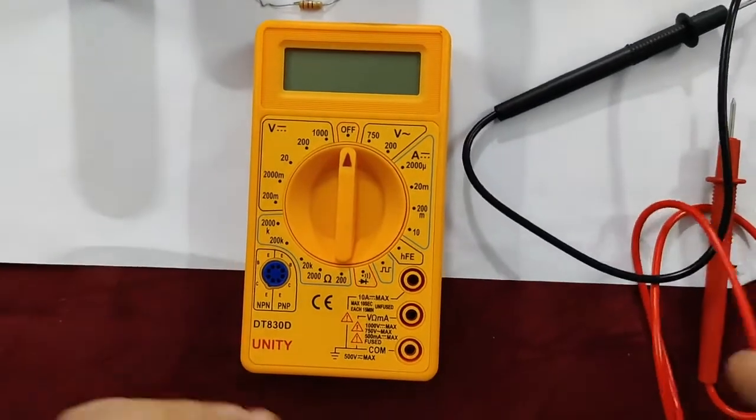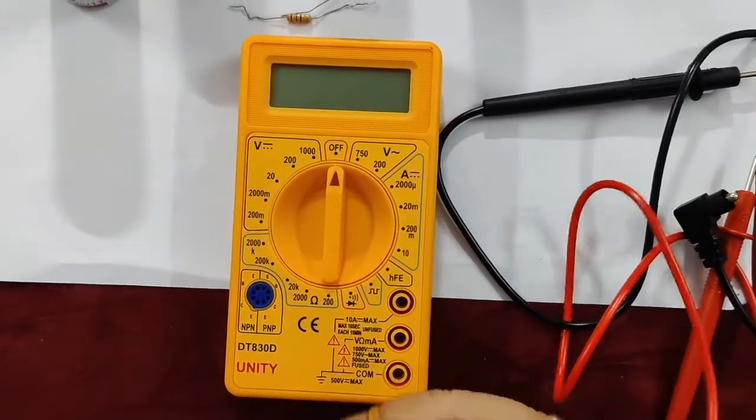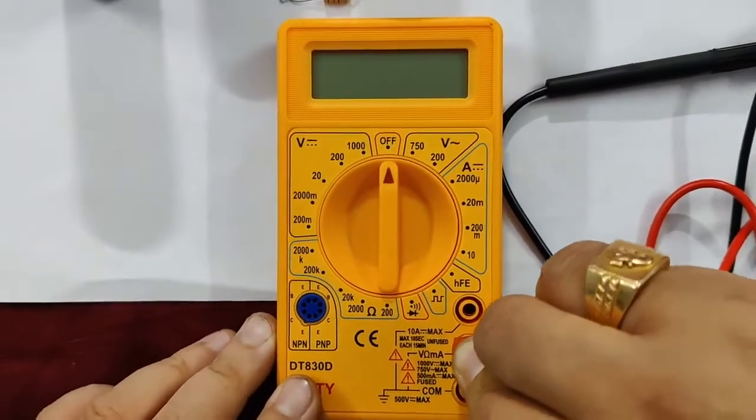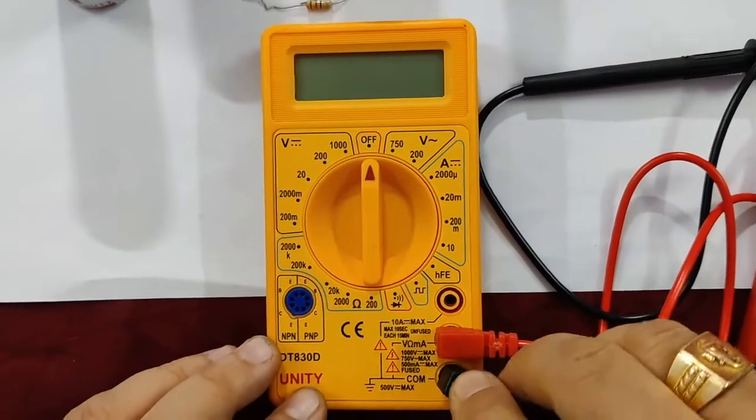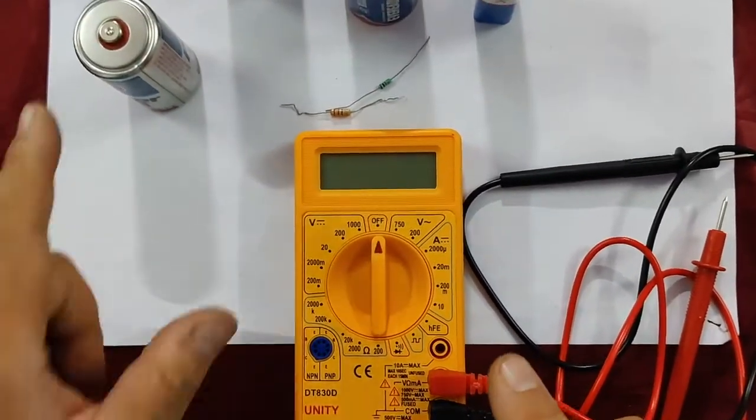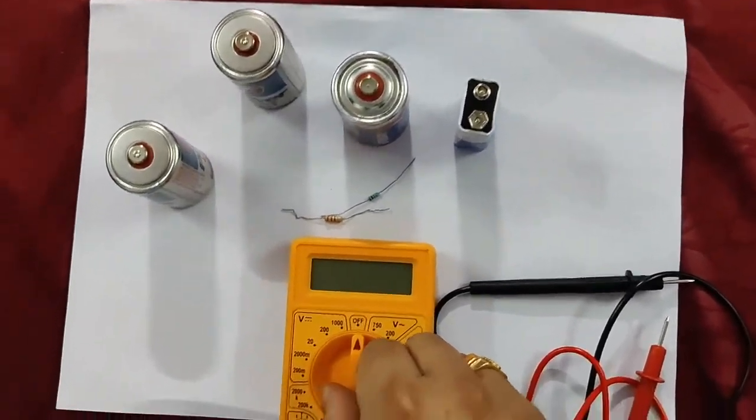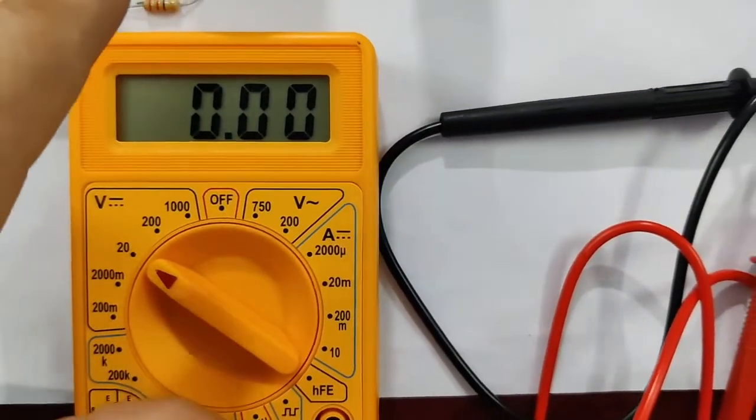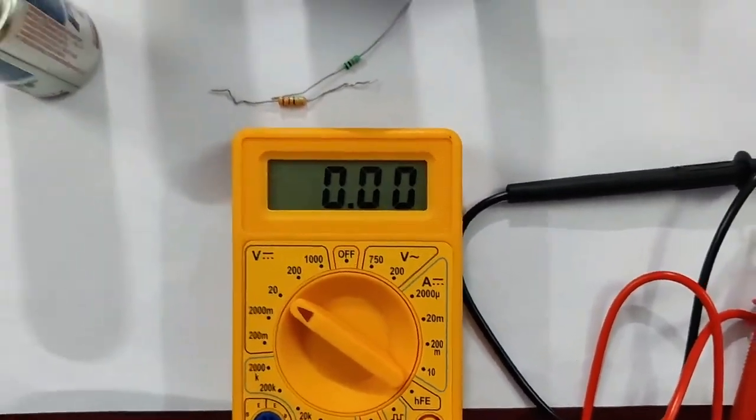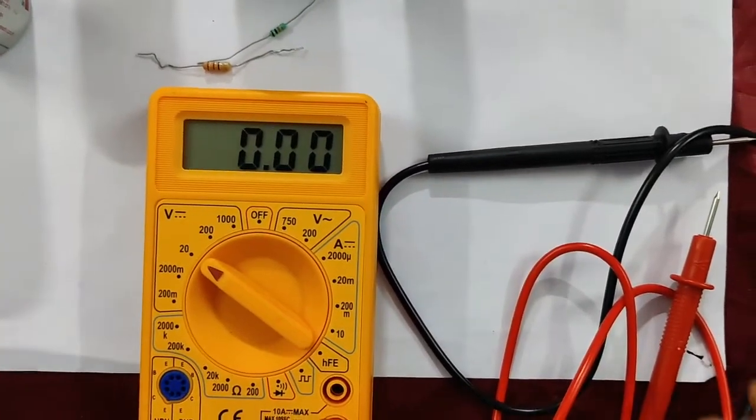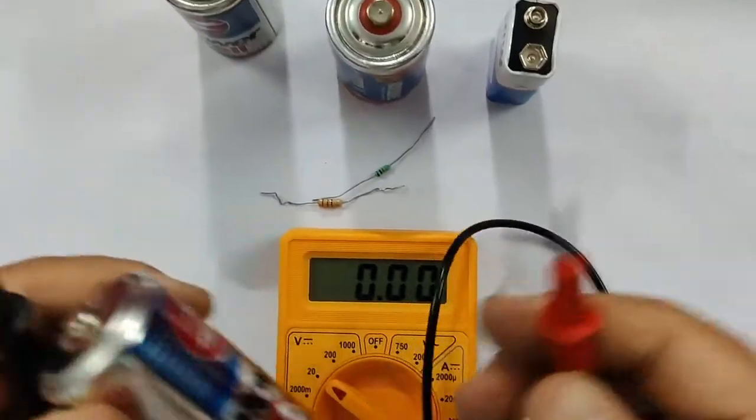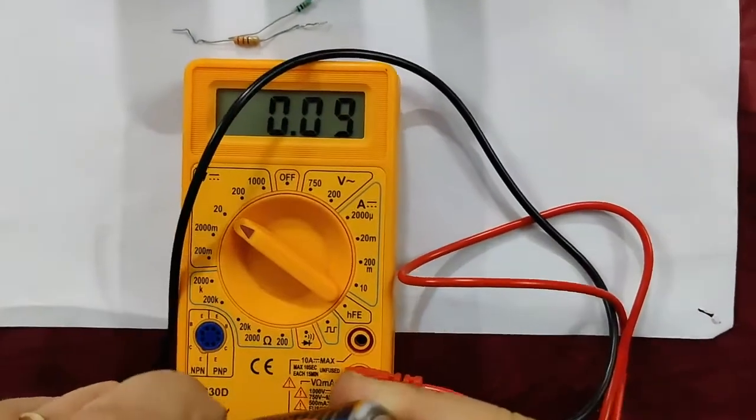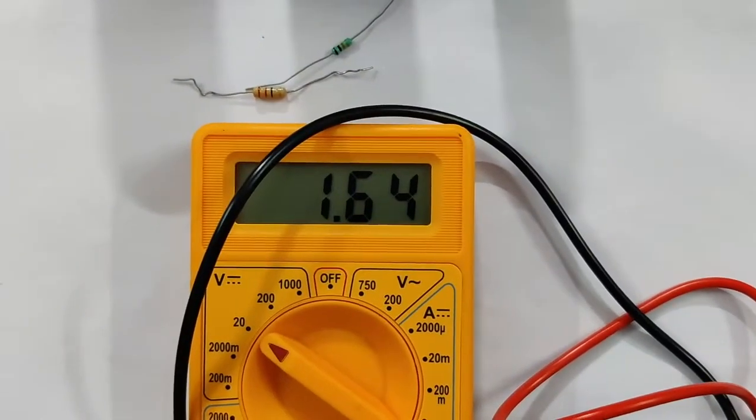So first of all, you will put the pointer at 20 volts. Then in 20 volts, all the voltage will be in the range. Actually, the new voltage is 1.5. You will check the voltage. You have to hold these two terminals and touch it to positive and negative terminals. After you touch it, you will see the reading. 1.6 volts.